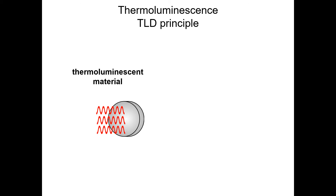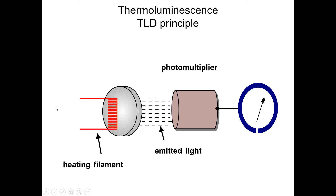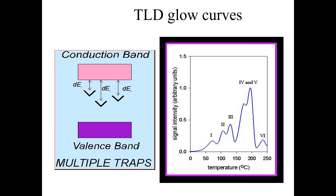In the first process we have thermoluminescent materials. When radiation falls on this particular material and we start heating it, it emits light. This light is made to fall on a photomultiplier tube, after which it is focused on a signal detector — an electronic circuit — which gives us a detection signal. Multiple types of phenomena are being shown here with the help of this diagram.